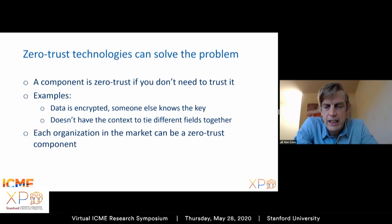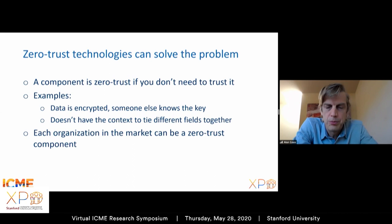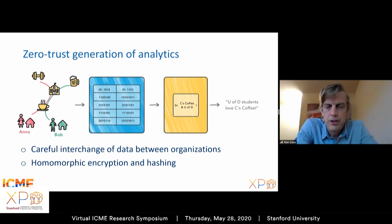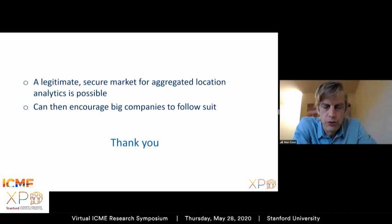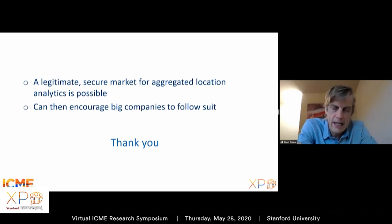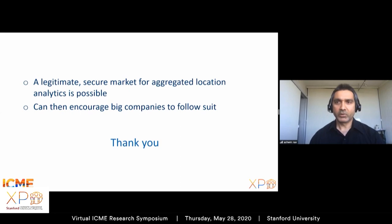Zero trust is an overhyped term, but essentially it means not that you don't trust a component, but that you don't need to trust it — because it doesn't know enough to be dangerous. For example, if it collects data, the data is encrypted and some other component holds the key. If it's doing analytics like counting location visits, it doesn't have enough context to tie anything to a single individual. Every organization in this gray market should participate as a zero-trust component. There are solutions using just two zero-trust components in separate organizations, employing new cryptography that combines homomorphic encryption and hashing into a single unit, enabling a legitimate and provably secure market for aggregate location analytics.